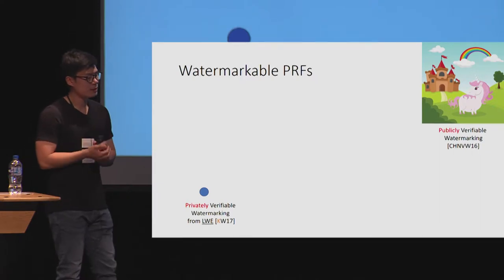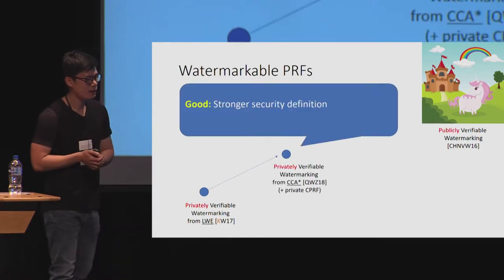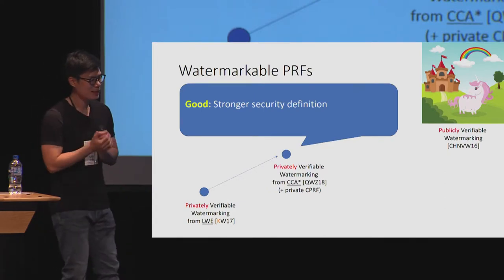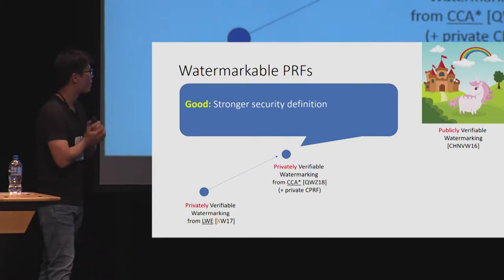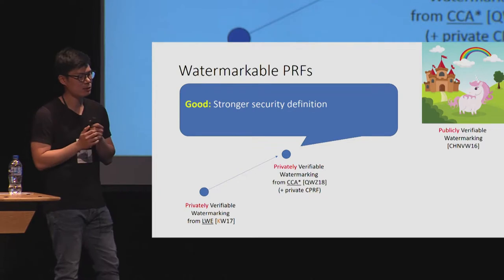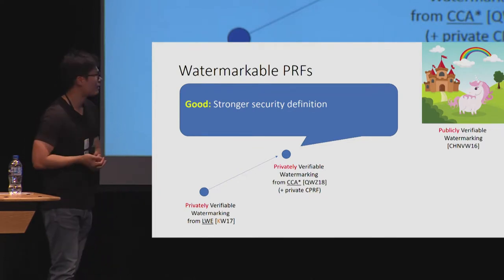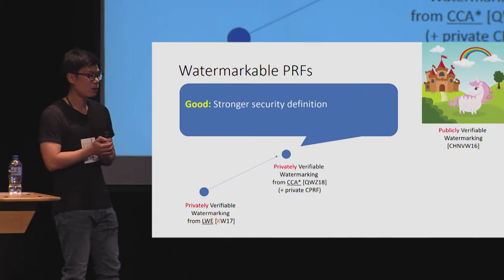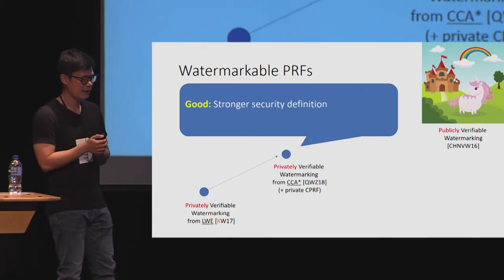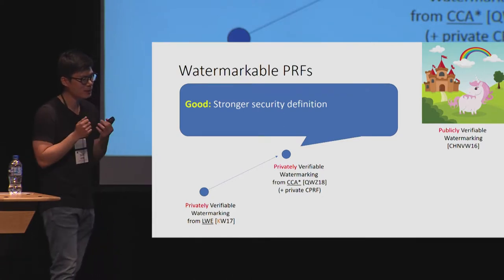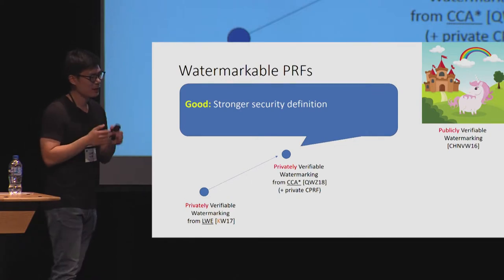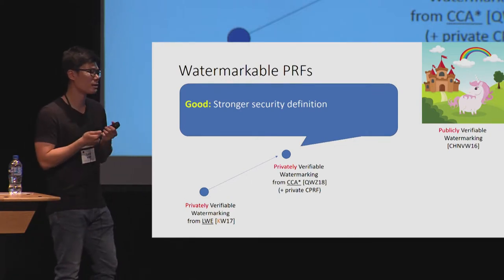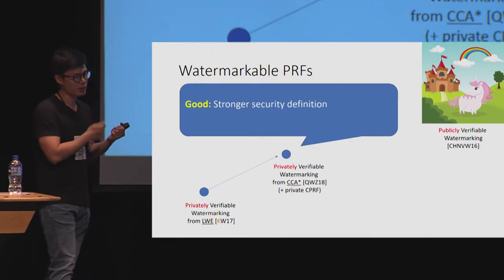Just last year there was very nice work due to Quash, Wix, and Zerdelis, who basically constructed a privately verifiable watermarking scheme just using a CCA-secure encryption scheme and also a privately puncturable PRF. They showed that relying just on CCA-secure encryption and a privately puncturable PRF, they can construct a watermarking scheme for PRFs that achieves a much stronger security guarantee than the construction of Kim and Wu.